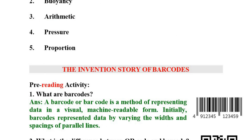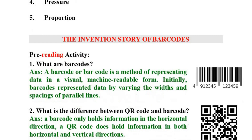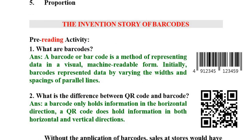Next topic: The Invention Story of Barcodes. Pre-reading activity — What are barcodes? Barcodes are machine-readable forms. The barcode image consists of parallel lines. The difference between a QR code and a barcode: a barcode uses horizontal lines, but a QR code uses both horizontal and vertical directions with boxes and lines.